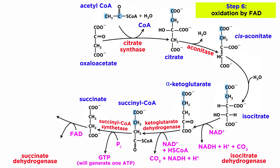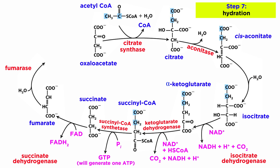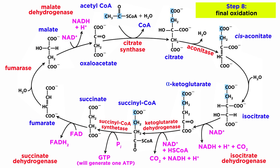Then, with the help of succinate dehydrogenase, succinate is oxidized by a different molecule, FAD, which will result in fumarate and FADH2. Next, fumarase will catalyze hydration, which results in malate, and lastly one more oxidation by NAD+ takes place with the help of malate dehydrogenase to give oxaloacetate, which will restart the cycle, reacting with a new acetyl-CoA.